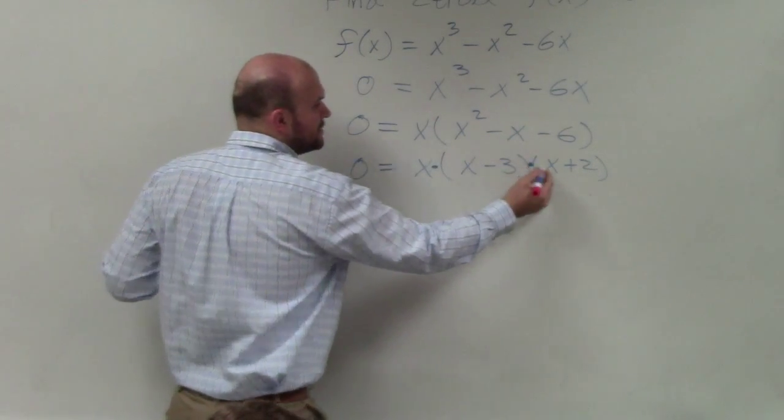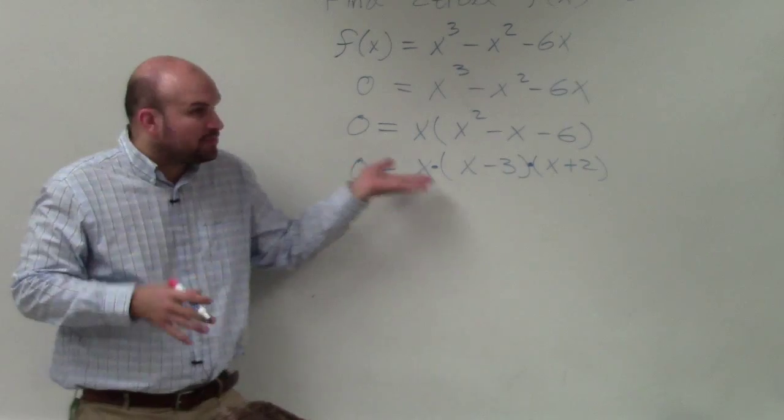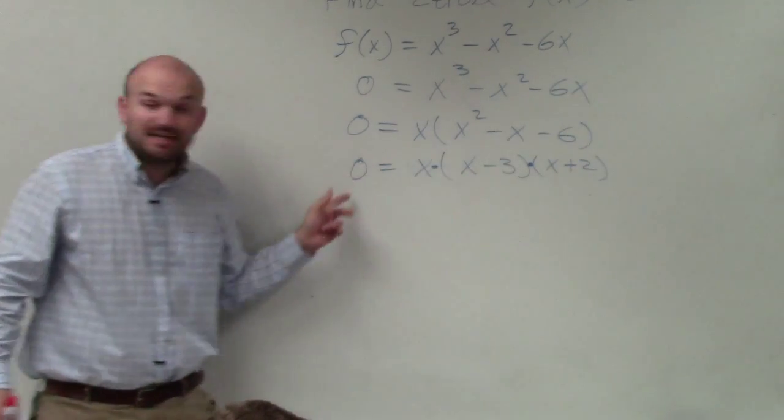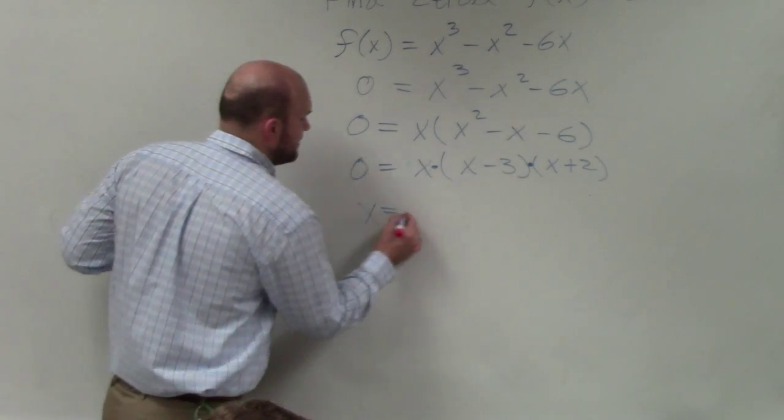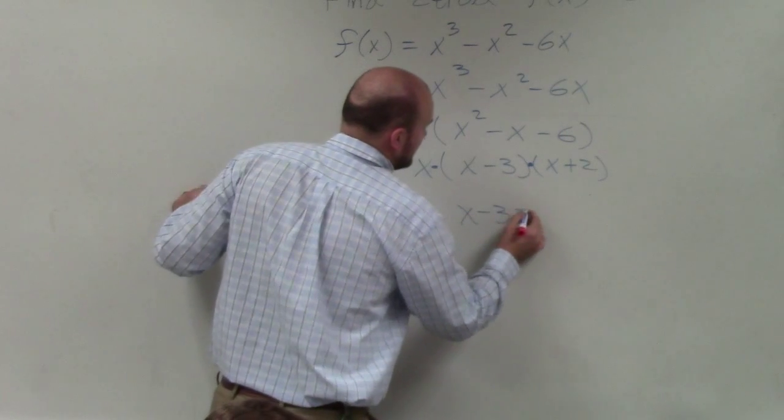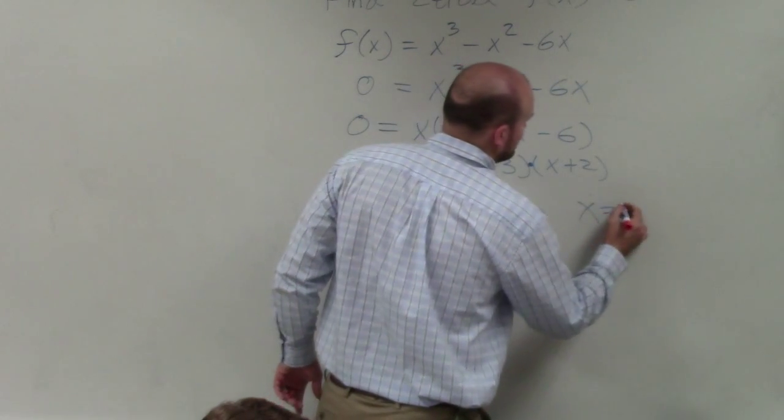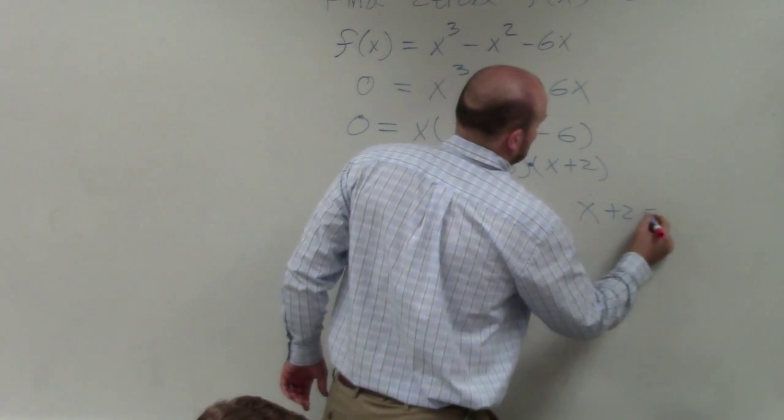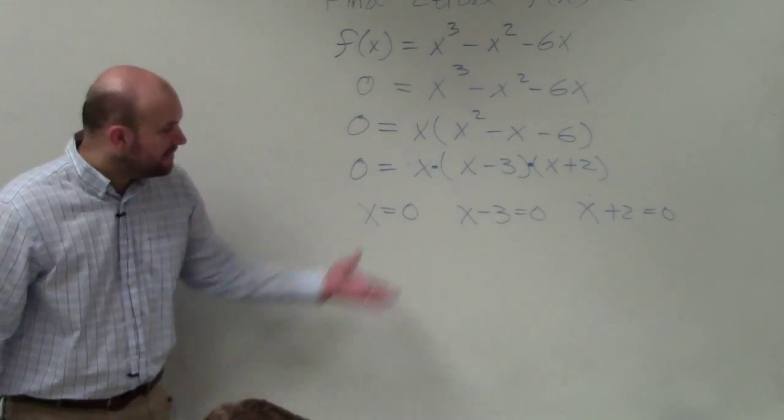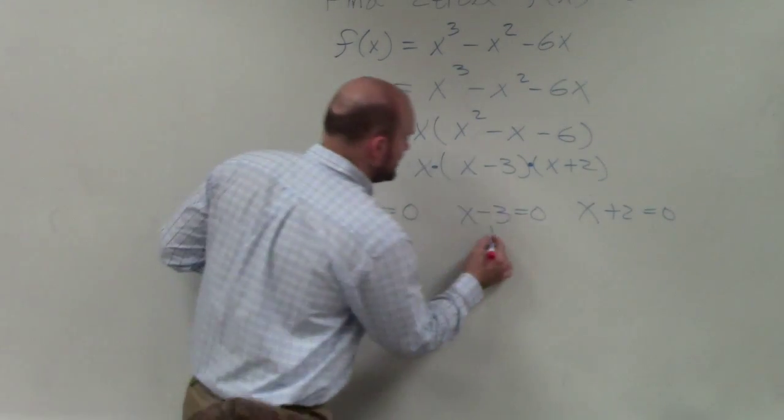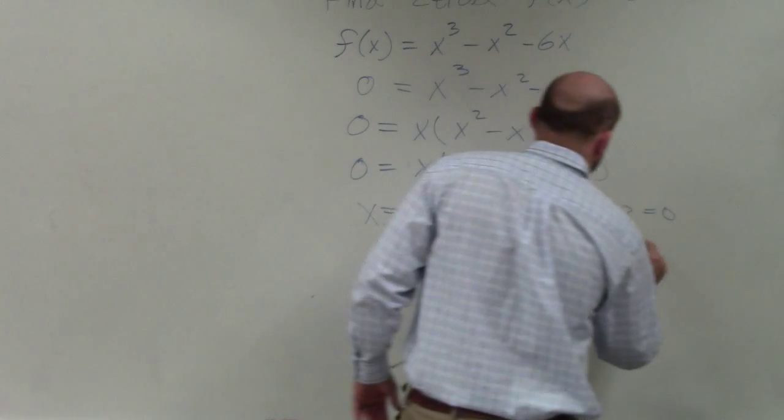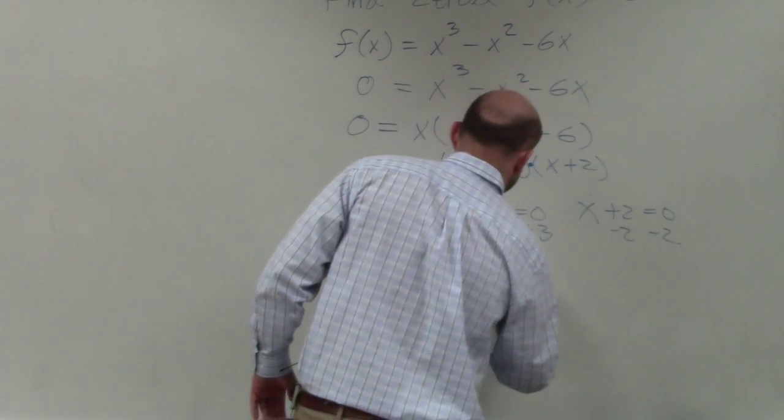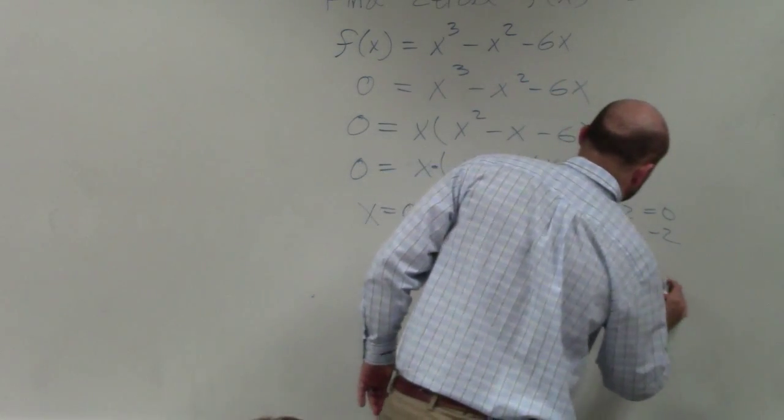By the process of zero product property, remember when you have the product of terms or expressions that's equal to 0, you can now set them all equal to 0 to solve for your zeros. Then we just go ahead and solve. This one's already solved. Here, add 3, minus 2, x equals 3, x equals negative 2.